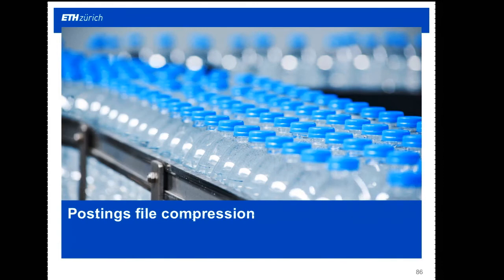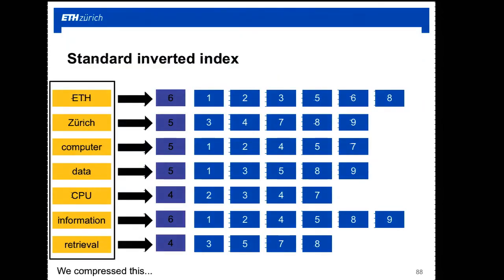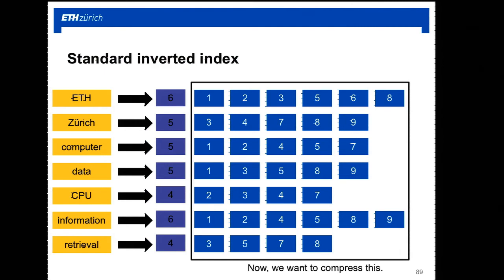It's 10:15, so let's start the second part of the lecture: compression of posting lists. We've already compressed the dictionary — roughly by half on the analyzed dataset. Now we compress the posting lists. Remember: in the standard inverted index, the term is implicit, so what we actually store in posting lists is just lists of document IDs — that is, lists of integers. The question is: how do we compress lists of integers?